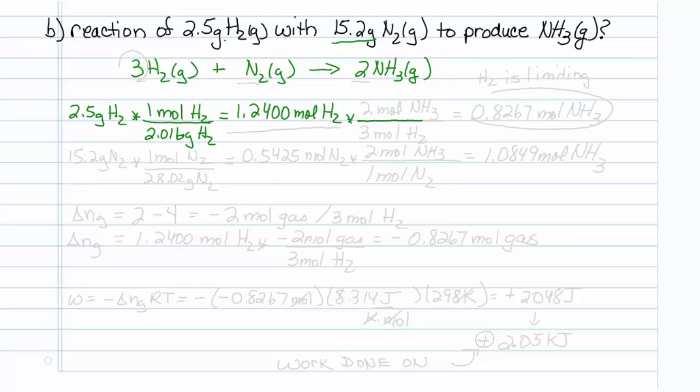To figure out limiting reagent, one usually looks at the amount of product that can be made. There are 3 moles of hydrogen for every 2 moles of ammonia. So this amount of hydrogen gives me 0.8267 moles of ammonia.